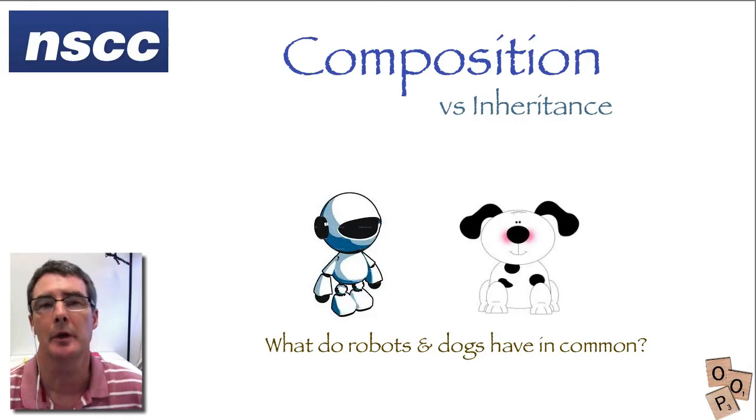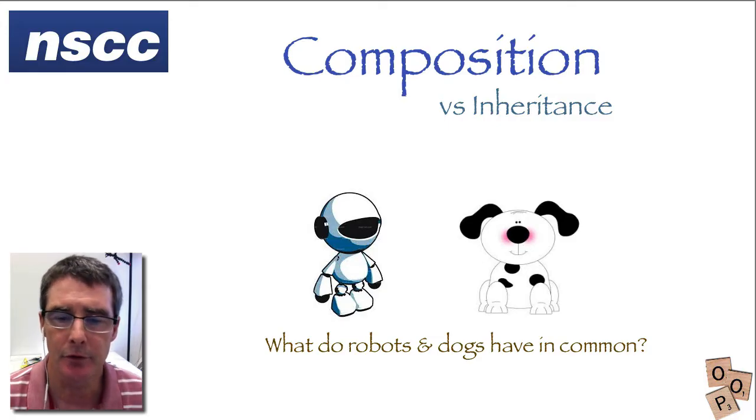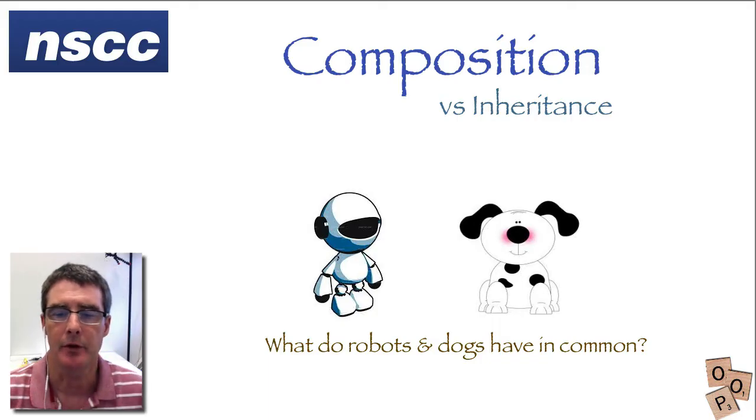This entire course has been about object-oriented design for software applications and we've talked about inheritance at length because inheritance occurs whenever an object is created. But using inheritance as a design model may not be ideal. When many students first study object-oriented languages they often think that using inheritance is the only way to create classes. Not so. And in this video you're going to discover that a design model called composition may be your best strategy.